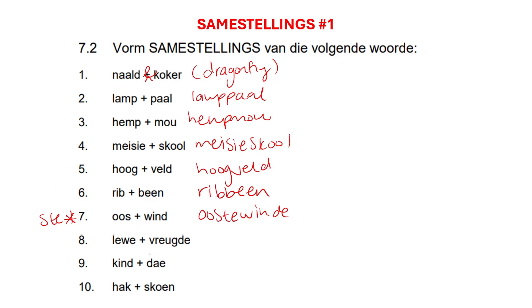'Lewe' plus 'vreugde' — anything with 'lewe' will become 'lewens'. That's what you have to remember. So this is now going to be 'lewensvreugde'. Atrocious handwriting, I know. 'Lewens'.